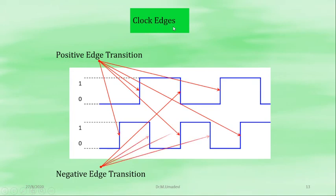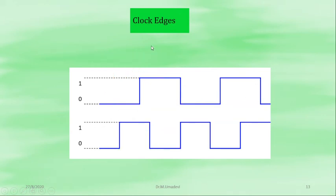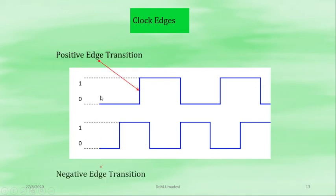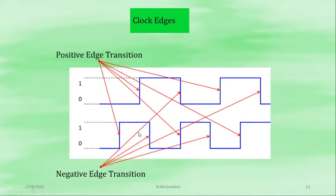Next, clocked edges. This is positive edge transition — this is the 1 state — and this is negative edge transition, the 0 state. When we apply the clock pulse, these are all positive edges and these are all negative edges. The other name for positive edge transition is called rising edge, and negative edge transition is called falling edge.